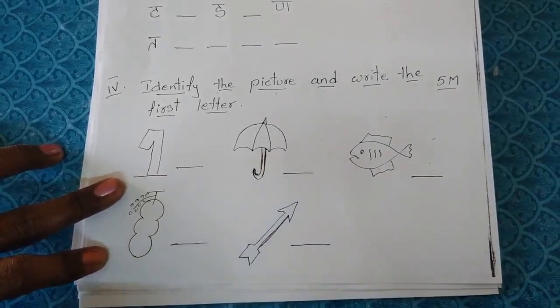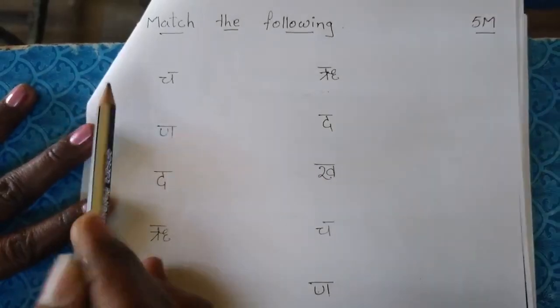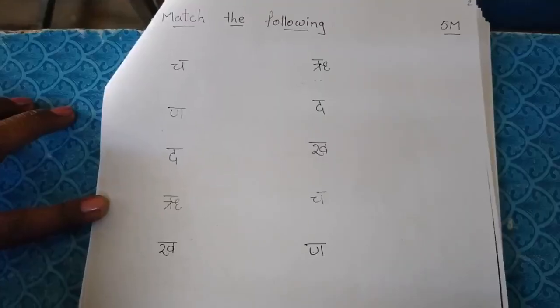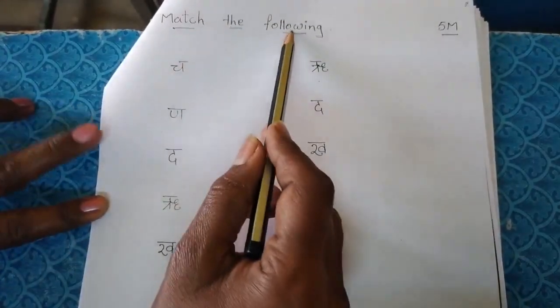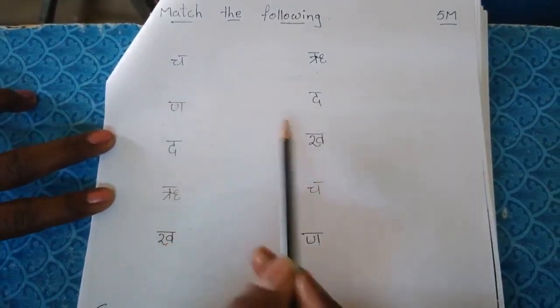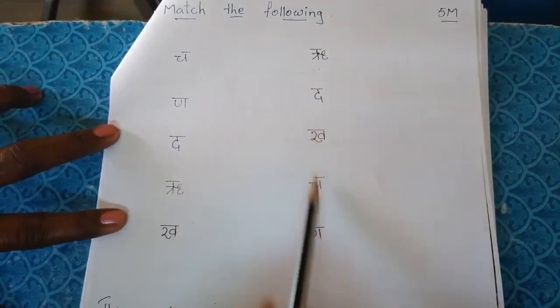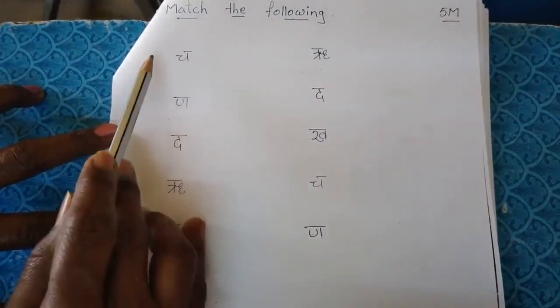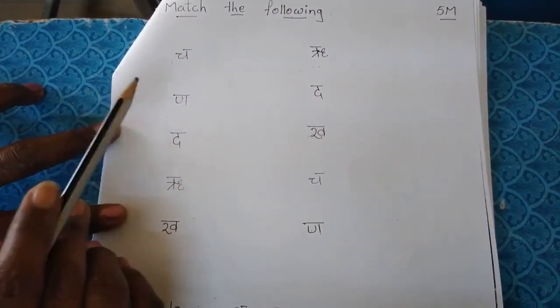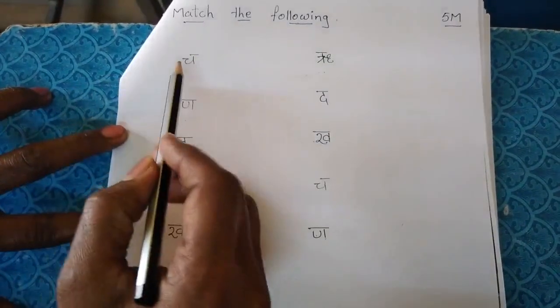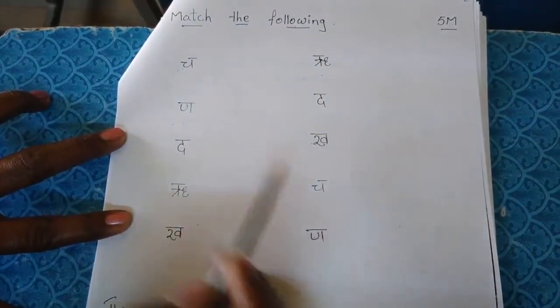But next bit is match the following. Match the following letter to letter. First you have to identify the letters and draw a line letter to letter. Same letter you have to match.